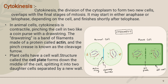There are little differences between animal and plant cell division. Plant cells have a cell wall, so a structure called the cell plate forms down the middle of the cell, splitting it into two daughter cells separated by a new wall.